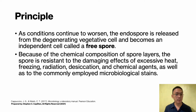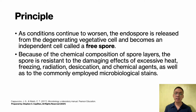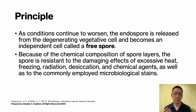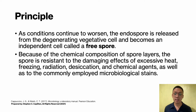As conditions continue to worsen, the endospore is released from the degenerating vegetative cell and becomes an independent free spore. Because of the chemical composition of the spore layers, the spore is resistant to damaging effects of excessive heat, freezing, radiation, desiccation, and chemical agents. With the return of favorable environmental conditions, free spores may revert to a metabolically active and less resistant vegetative cell through the process of germination.